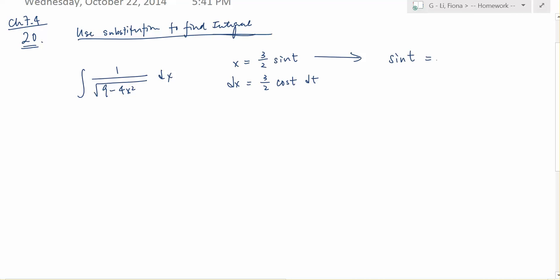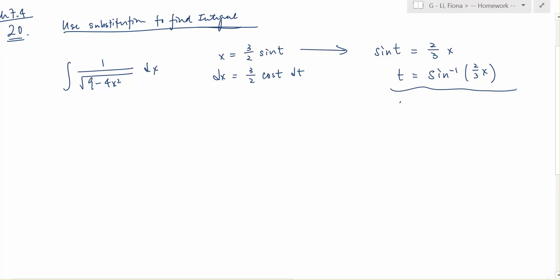Sine t will be equals to 2 over 3x, and t will be equals to arc sine 2 over 3x. Trust me, we will be using this later.